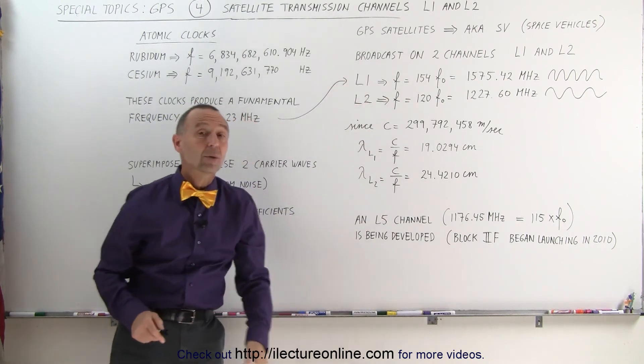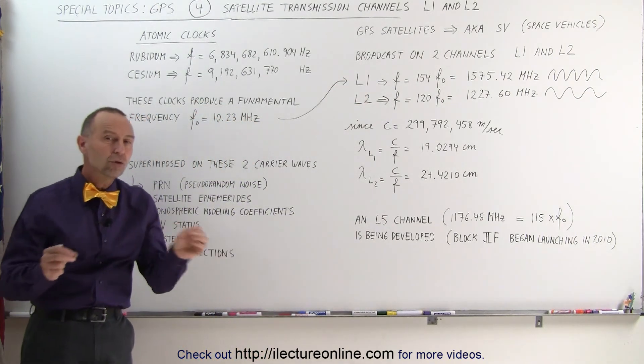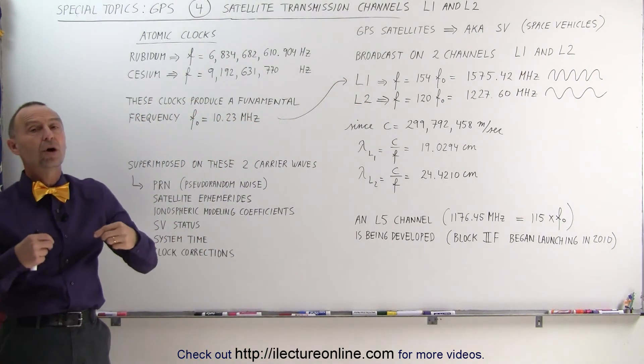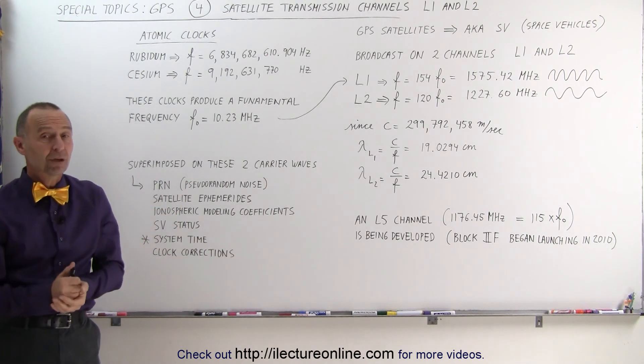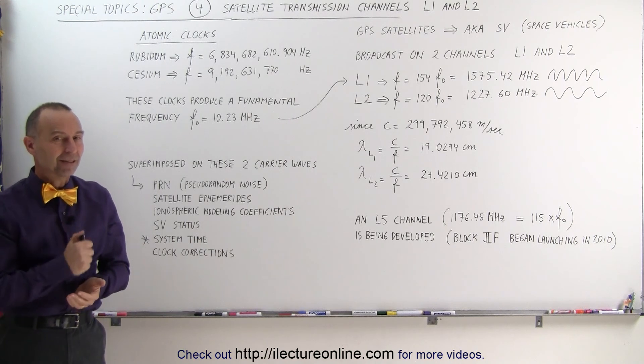So that's the base frequency, then produces the two carrier frequencies, which are then broadcast on L1 and L2. And on each of the two channels, L1 and L2, we then superimpose specific information that the GPS receivers need. That's how it's done.